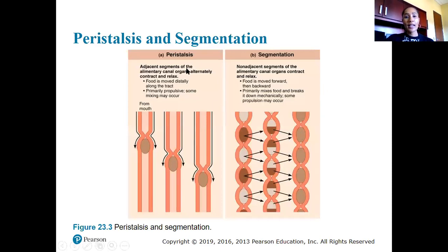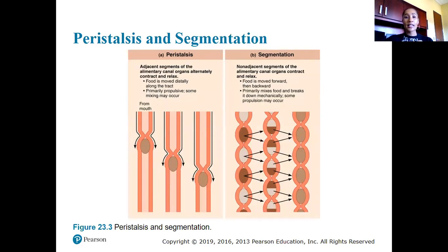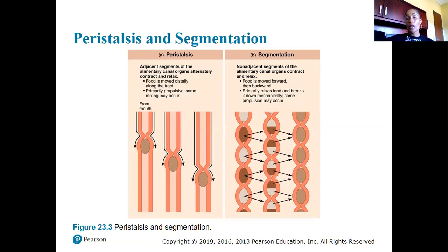We have a diagram showing how waves of contractions propel food through the GI tract via peristalsis. With peristalsis, adjacent segments of the alimentary canal organs are alternatingly contracting and relaxing — organs that are near each other, such as oral cavity to throat or throat to esophagus.